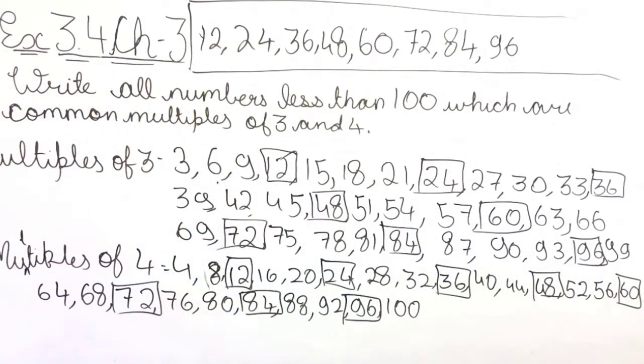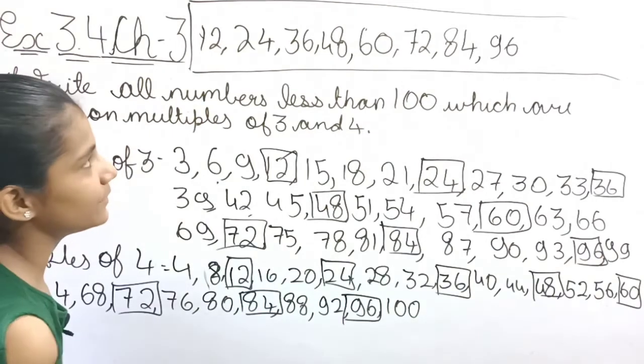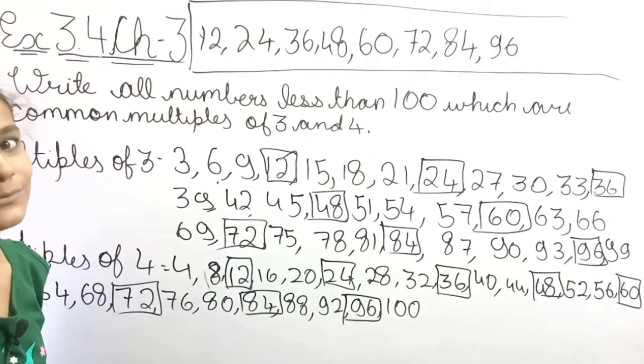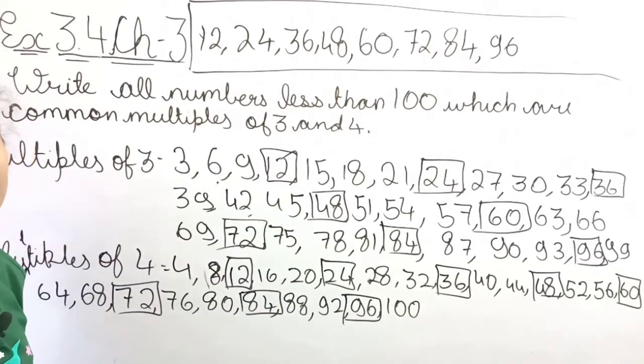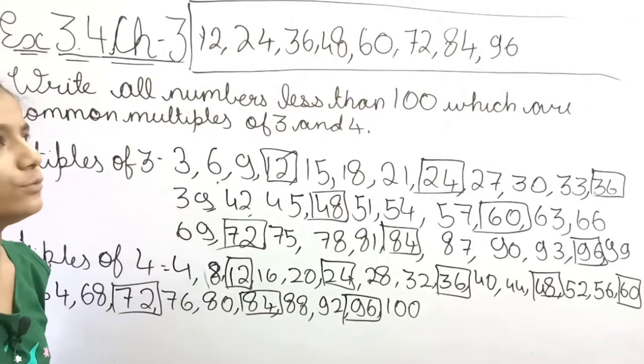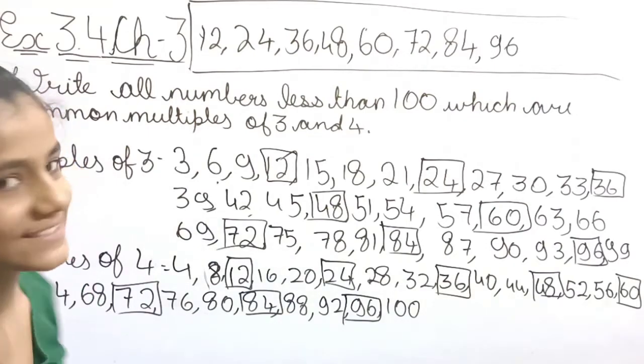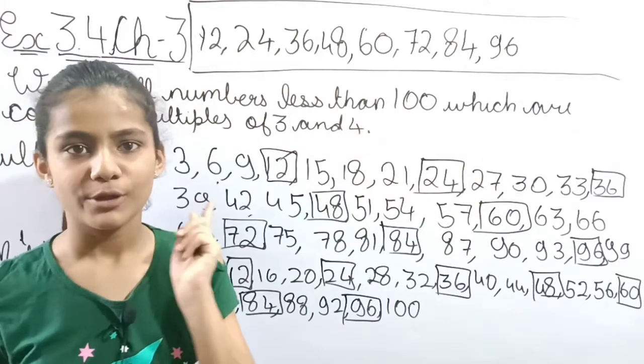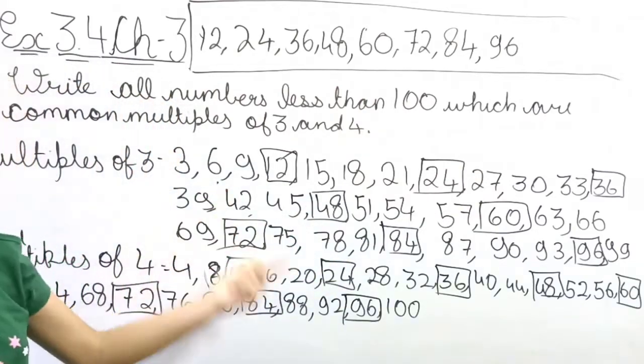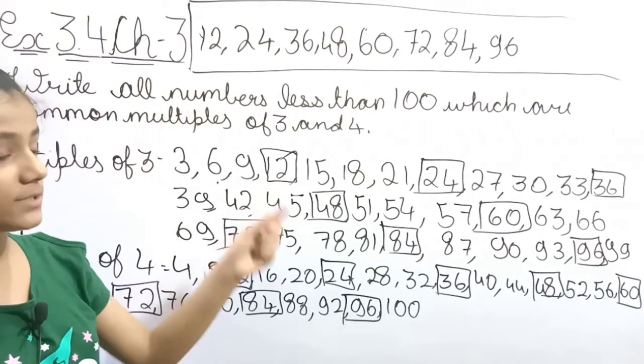So what is the short trick? It is making a pattern. 12, 24, 36, 48, 60, 72, 84, 96. So this is our table. This is the short trick.